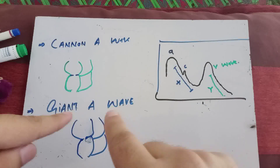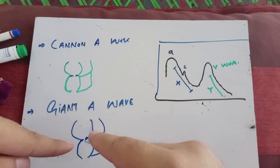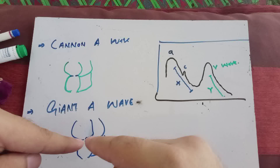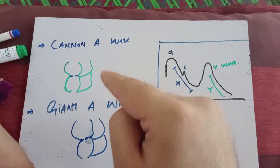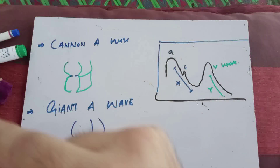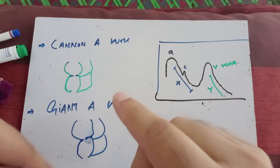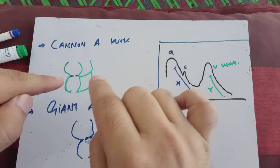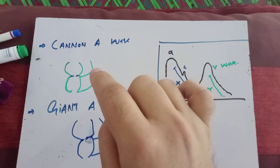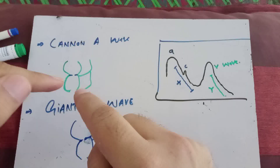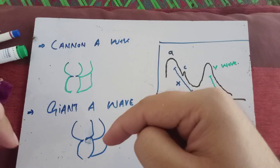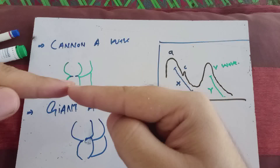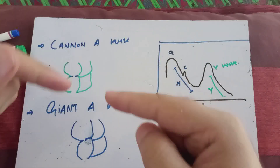The giant A wave is again a tall A wave, but here resistance is less. There are two types of problems: the cannon A wave is produced due to a rhythm problem, and the giant A wave is produced due to a resistance problem. The rhythm problem means the tricuspid valve was supposed to open, but it did not open due to the rhythm problem, so the atria contract against the closed valve.